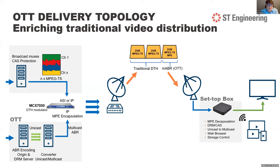One topology starts from the traditional video world and one from an IP satellite network. The first topology shows how traditional video service providers like DTH operators can enrich their delivery without having to change the entire set-top box base from day one. The top left shows the traditional video playout, where the transport stream is transmitted over satellite as specified by DVB, received by a DTH set-top box targeting TV screens.